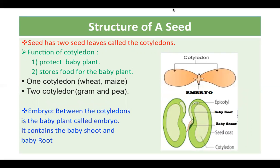A seed has two seed leaves called the cotyledon. If you have a seed that was soaked in water for four to five hours, you can easily remove the seed coat. Now open that seed — you will find that you can divide it into two equal parts, and these two parts are called seed leaves, also called cotyledon.